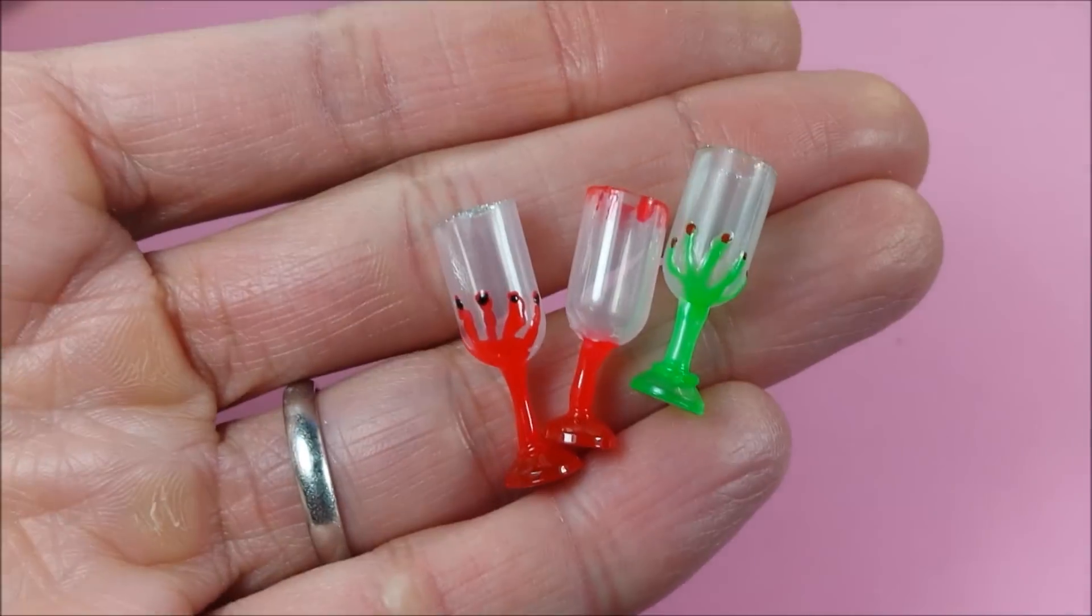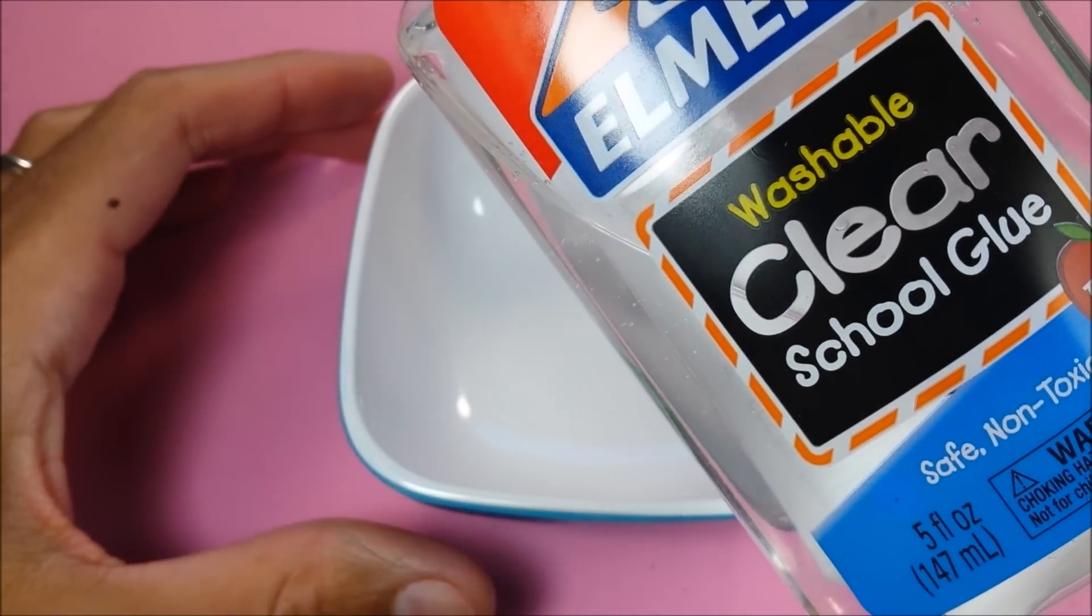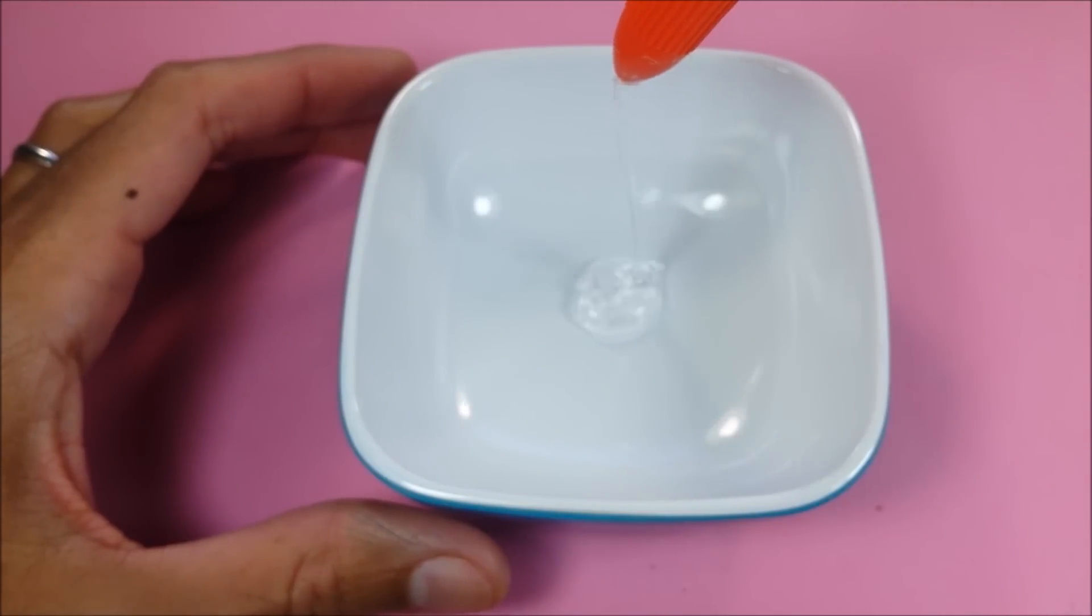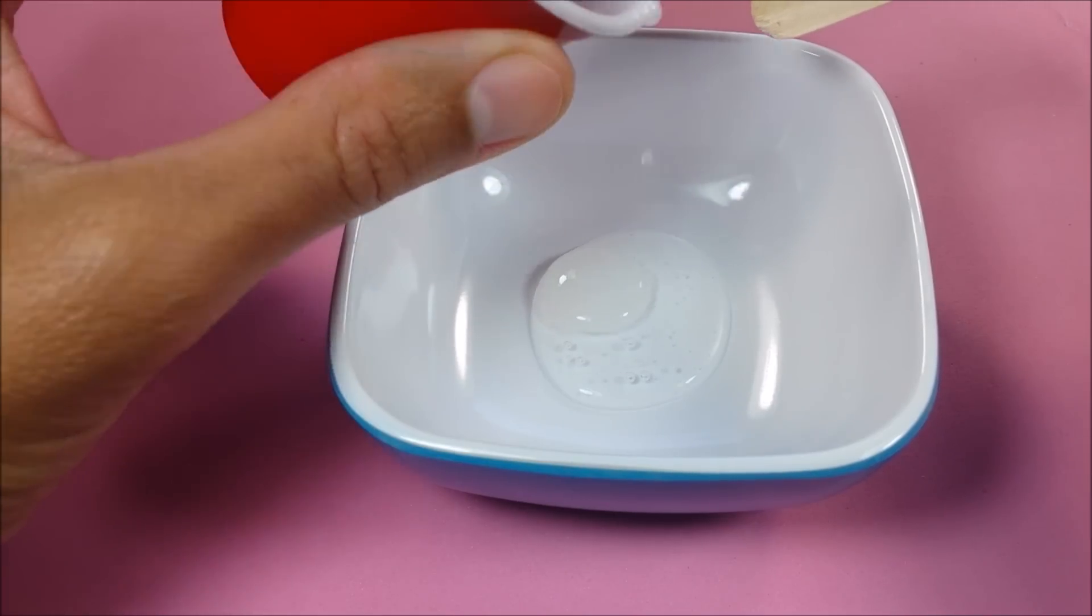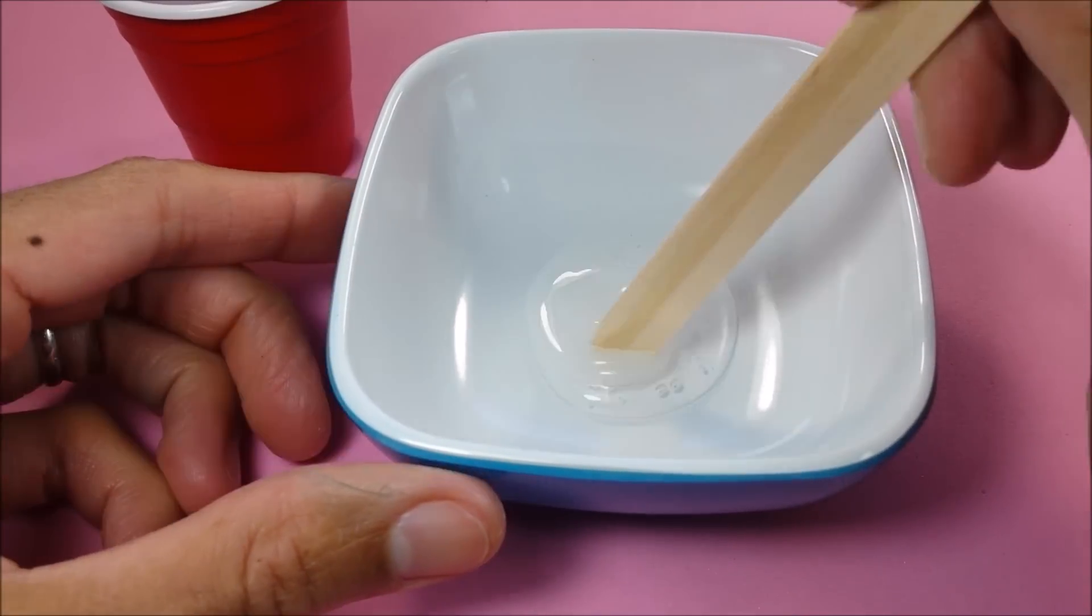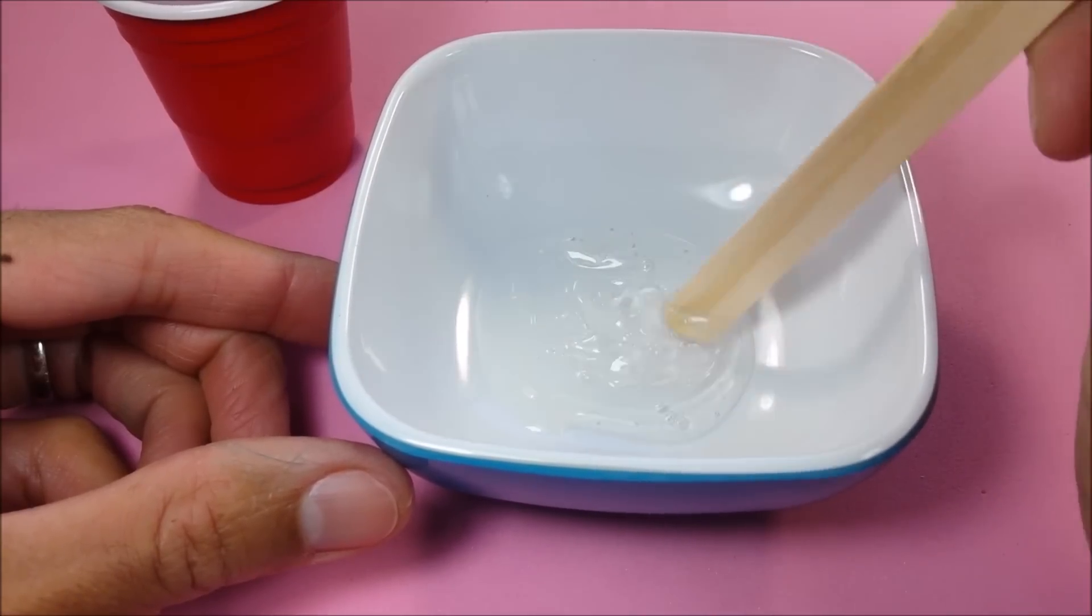When dry, I can start on my slime. I'm just taking clear school glue, just a small amount, and some liquid starch. I like liquid starch because it starts to work like immediately, so just a teensy teensy amount here. You can see already, as soon as I begin to stir it, it's starting to clump up.